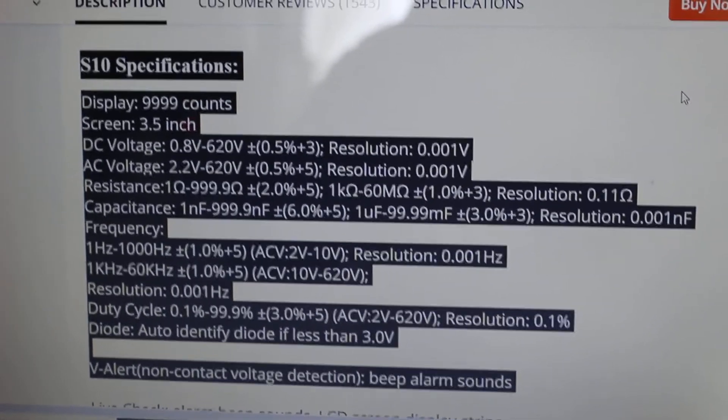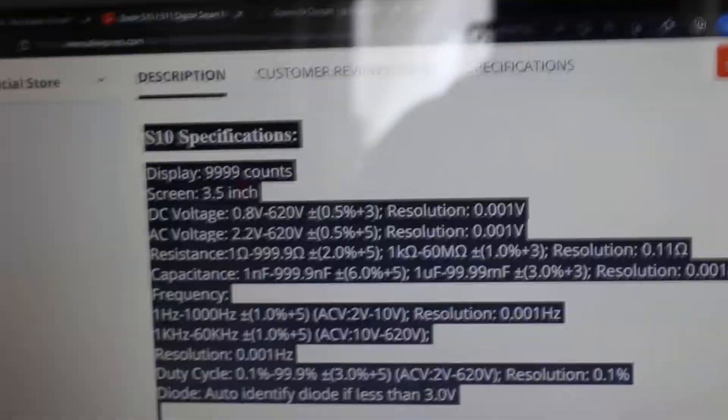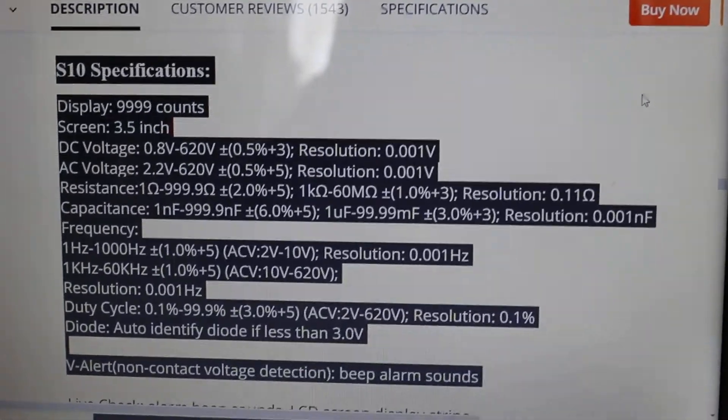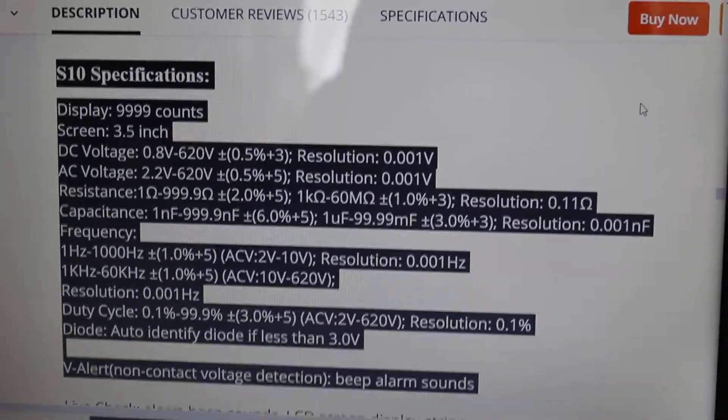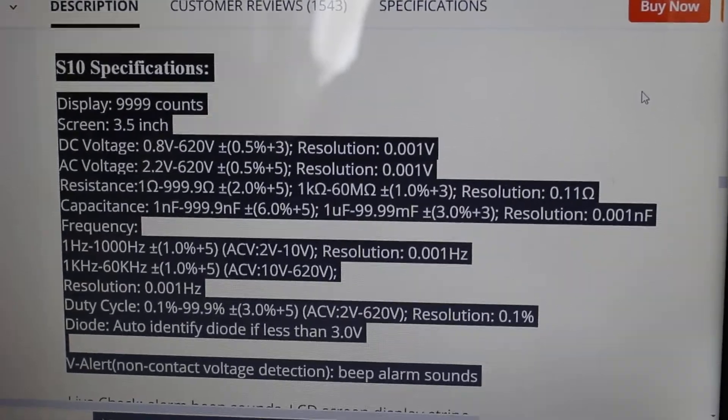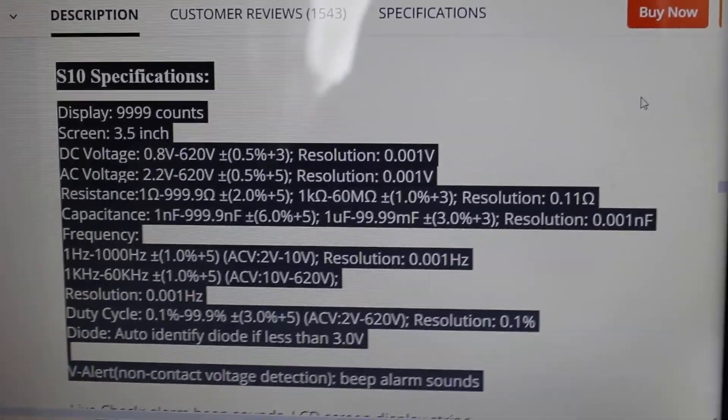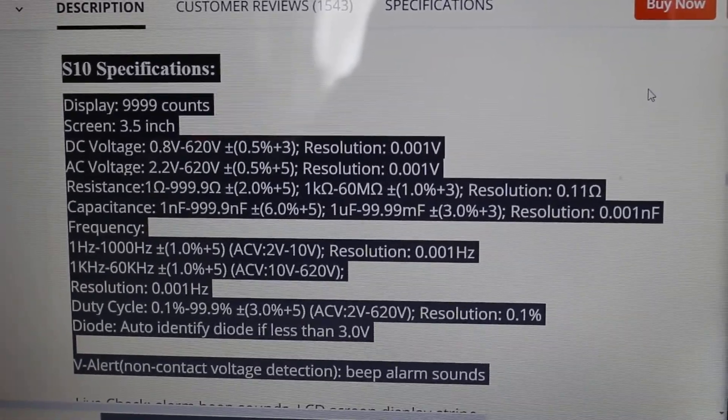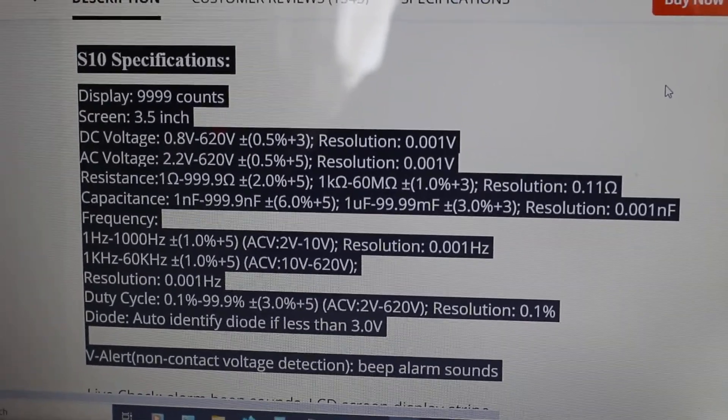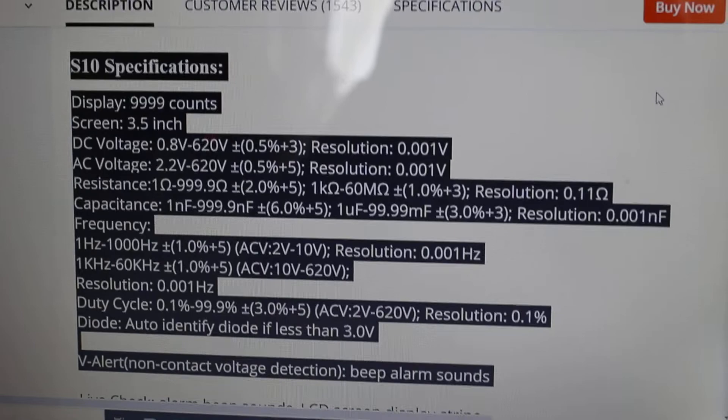That's for the automatic measurement. So your DC voltage needs at least 0.8 volts before the automatic measurement can pick up that a voltage is coming in. And the AC voltage measurement needs a minimum 2.2 volts before it realizes that AC is coming in. And the resistance needs at least one ohm, capacitance needs at least one nanofarad, and so on.